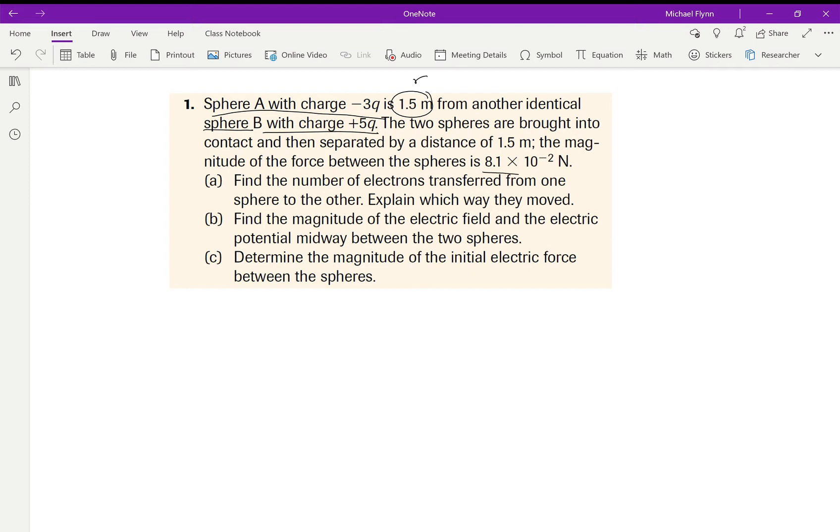At that time, the magnitude of the force between the spheres is 8.1 times 10 to the negative 2 newtons. If you have two charges, this one's negative 3q and that one is positive 5q, the total charge here in terms of q is plus 2q. Does that make sense? Just add them together: negative 3q plus 5q is positive 2q.